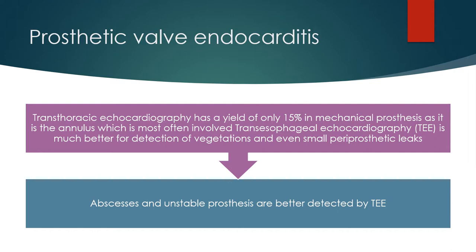Transesophageal echocardiography is much better for the detection of vegetations and even small periprosthetic leaks. Abscesses and unstable prosthesis are better detected by TEE.